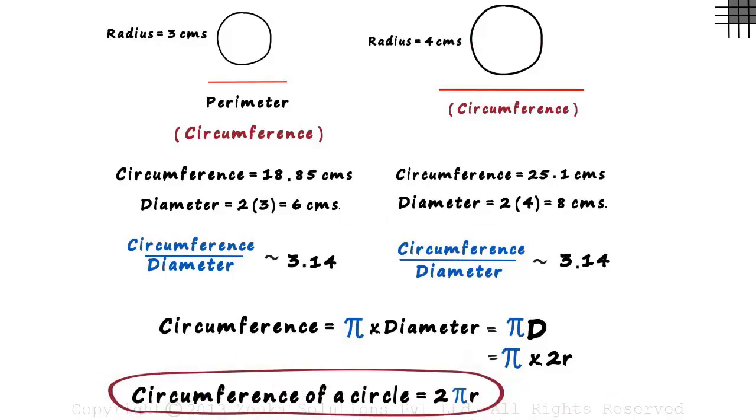This is a very important formula as it gives you the value of the circumference even if you just have the radius of the circle.